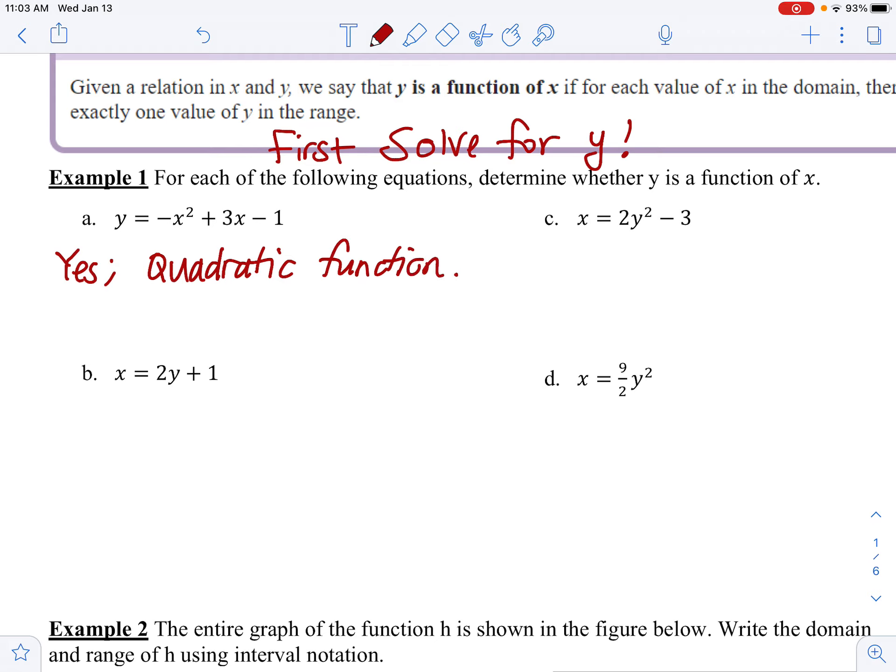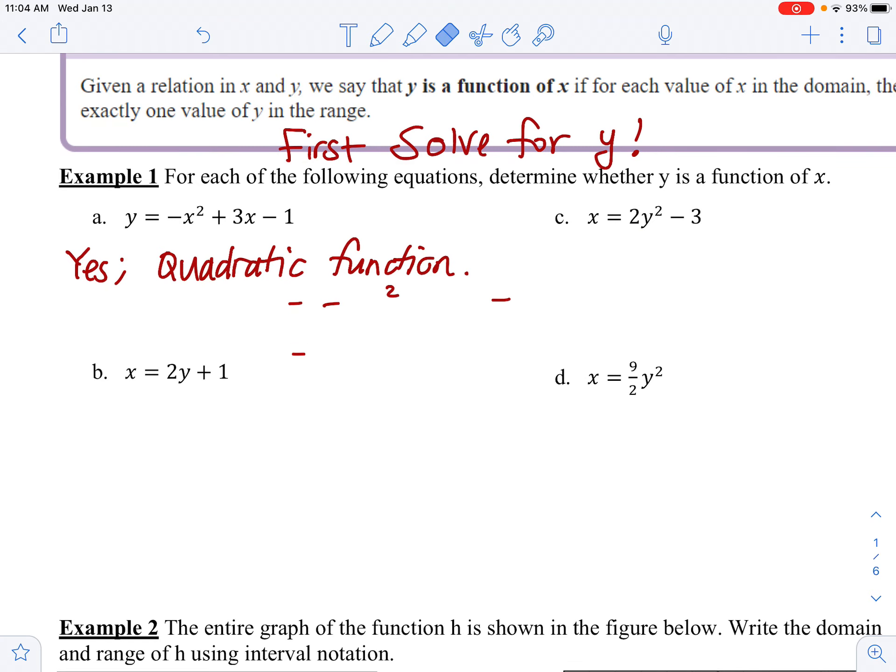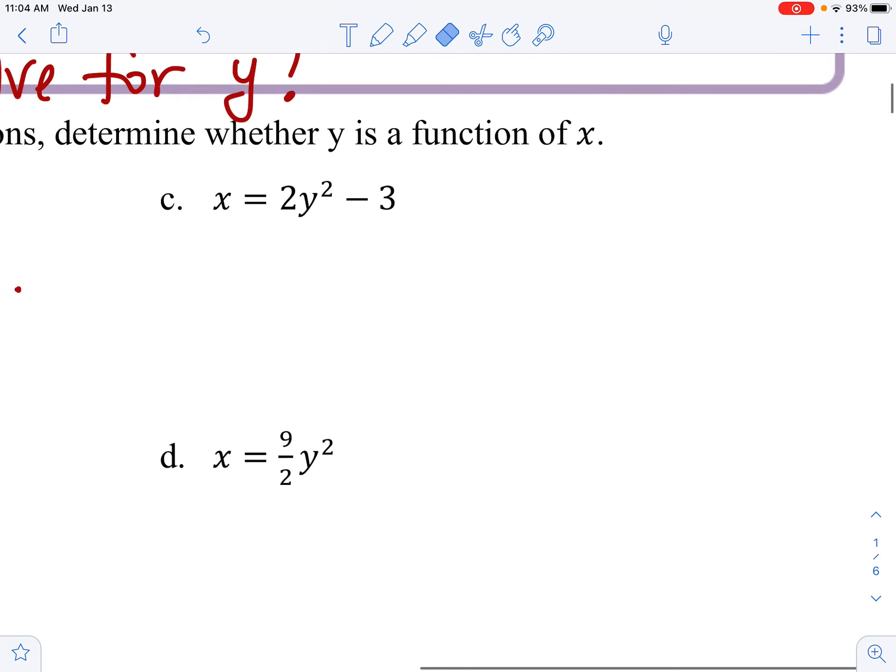Because any x value that you plug in here is going to give, for example, if you plug in 5 in there, and you follow the order of operation, you're going to get one y value. And every time you plug in 5 into this function, you are going to get that same y value. You're not going to plug in 5 one time and get like 100 one time and 20 the other time.